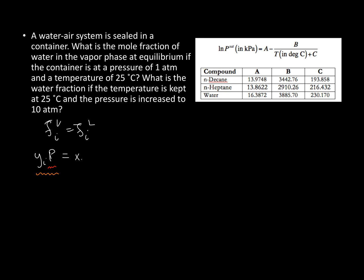On the liquid side, we have the mole fraction times the vapor pressure — I'll just write P star. So P star is just quicker to write than P sat. The approximations here are that we've approximated the pure liquid fugacity as the vapor pressure, meaning we've neglected the Poynting correction, assumed an ideal vapor phase, and assumed no non-ideality when mixing — so the activity coefficient equals one. The additional approximation is that the mole fraction of water in the liquid phase equals one, because a very small amount of gas dissolves and has negligible impact.